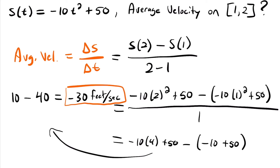But what if we wanted to know the exact velocity at a single point in time? This would be known as the instantaneous velocity. This is where the derivative comes in. Just like with the tangent line problem, where instead of knowing the slope between two points using a secant line we want the slope at one point using a tangent line — in the same way, we want to know the instantaneous velocity at one point in time rather than the average velocity over an interval.